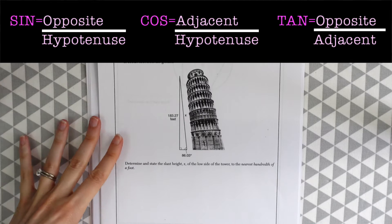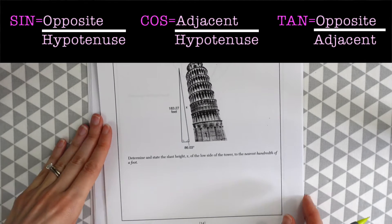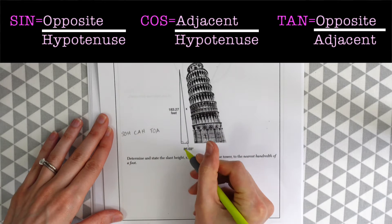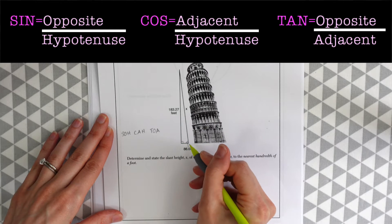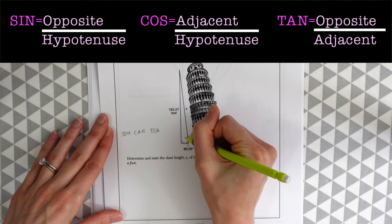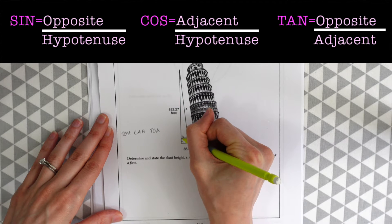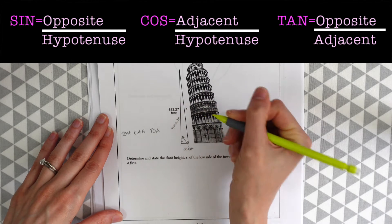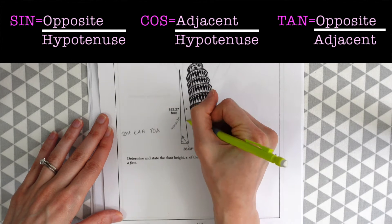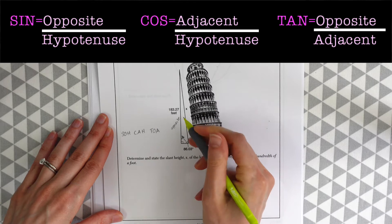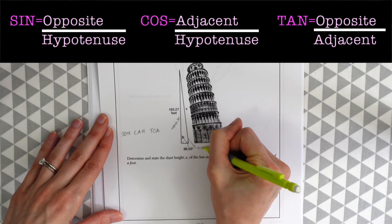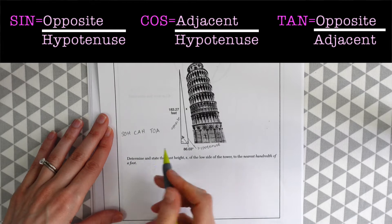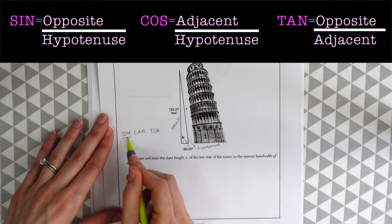So here we're going to have a SOH-CAH-TOA question of basic trigonometry. Notice that we are given this angle here, and everything is referenced to this angle. We have the information of the opposite side, and we want the hypotenuse. So we have the angle measure, and we just want the value of the hypotenuse.